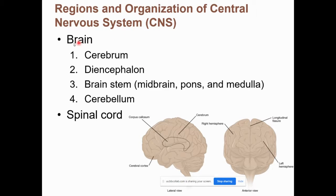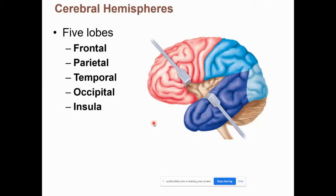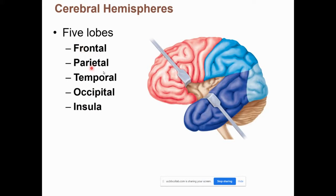Starting with the central nervous system, which is the brain and spinal cord. The brain is divided into four main parts. For the cerebrum, the main part of the brain, we should know what a gyrus versus a sulcus is — a ridge versus a groove. The longitudinal fissure separates the two hemispheres, and the corpus callosum connects the left and right sides of the brain. We have five lobes: frontal, parietal, temporal, occipital, and insula.